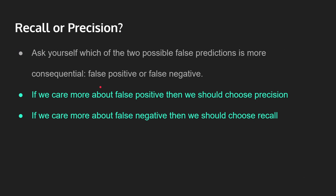Now you might be wondering: do we use precision or recall? To answer this question, ask yourself: which of the two following false predictions is more consequential? Which one has a bigger impact — predicting false negative or predicting false positive? If we care more about false positives, then we should choose precision. If we care more about false negatives, then we should choose recall. In our medical case, false negatives would be sick patients being predicted as not sick — that's clearly the more dangerous error.